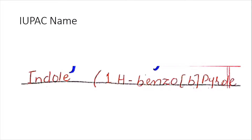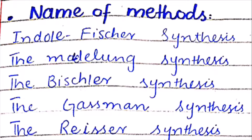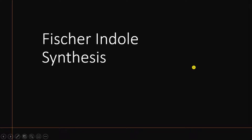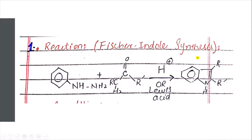The IUPAC name of indole is 1H-benzo[b]pyrrole. In further videos I will discuss how this name is derived. Next, there are several methods of preparation of indole: Fisher synthesis, Madelung synthesis, Bischler synthesis, Grassmann synthesis, and Leimgruber synthesis. In this video we will talk about only Fisher Indole Synthesis.